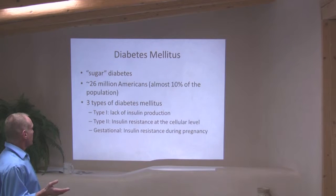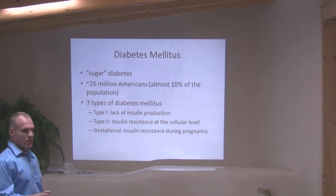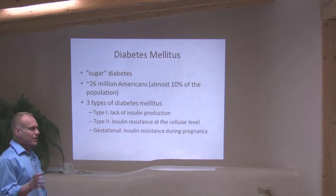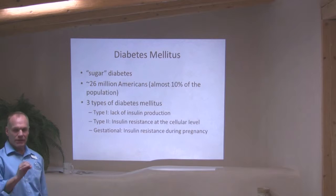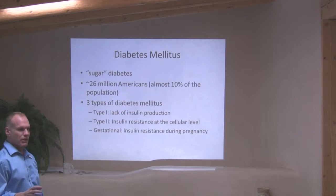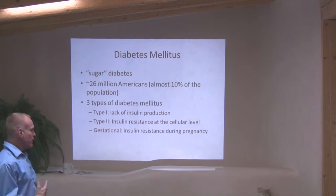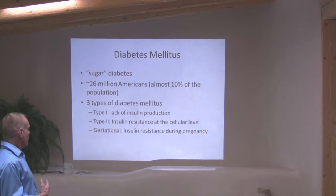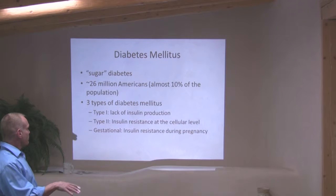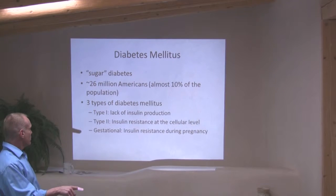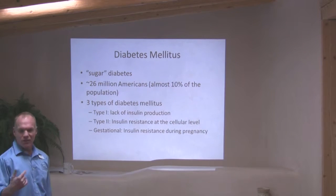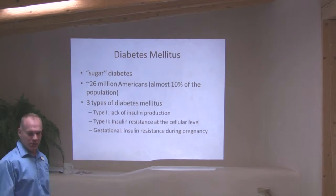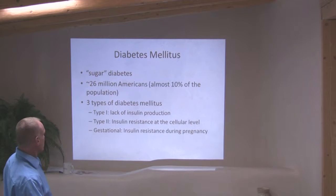That's 26 million Americans — extremely common. Type 1 diabetes is when you don't make insulin. Type 2 diabetes is when your cells don't see the insulin that you're making. There's also a third type — gestational diabetes — which we'll talk about briefly because it's not really going to be our patient population.